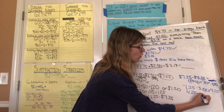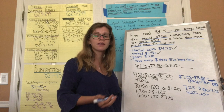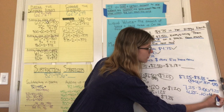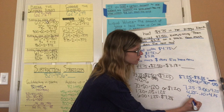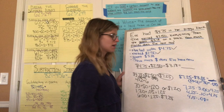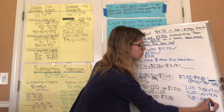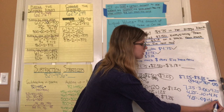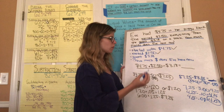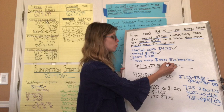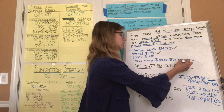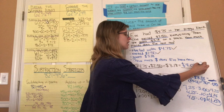Now I take away ten cents from four dollars and twenty-five cents: four twenty-five minus ten pennies equals four dollars and fifteen cents. Then fifteen cents minus eight cents — keeping the whole dollar the same — gives four dollars and seven cents. So Eve has four dollars and seven cents. We added two fifty that she earned, then subtracted three dollars and eighteen cents that she spent.